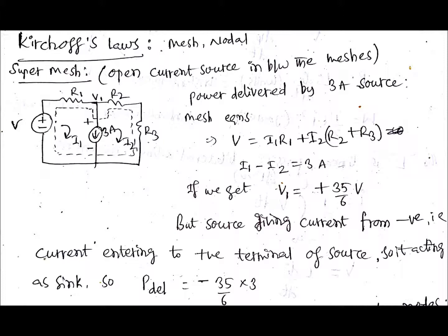That means you just open the current source in between the meshes. What is the meaning of that open? You just don't consider like no current is flowing through that, in that way, for writing the equation itself. Actually the current is there because of current source.